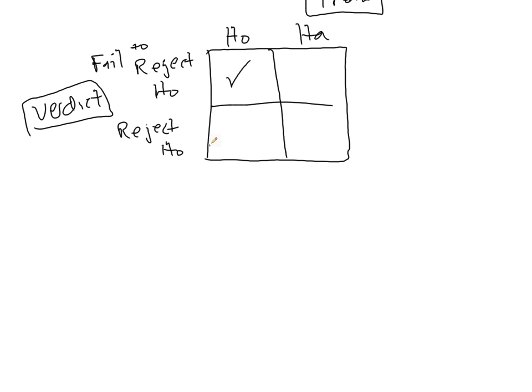But if we do reject H0, and we say that, no, we're accepting the alternative, but the null hypothesis is true, this is a Type I error.